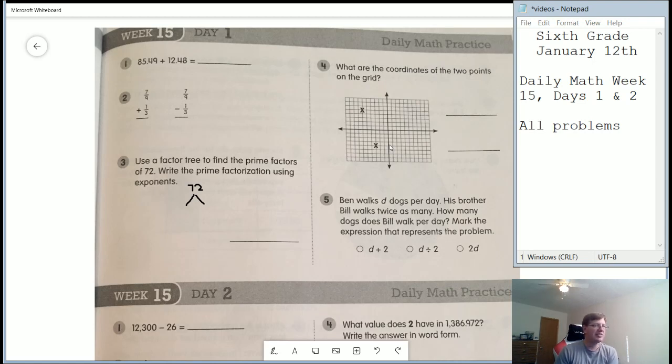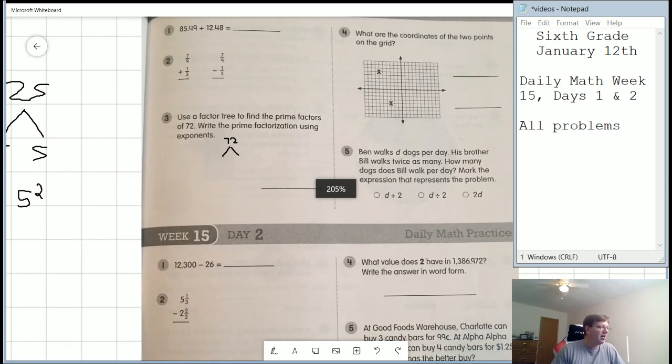Number five, Ben walks D dogs per day. His brother, Bill walks twice as many. How many dogs does Bill walk per day? And then we want to figure that out by representing one of these three options. So one of these three options says that Bill does twice as many per day.